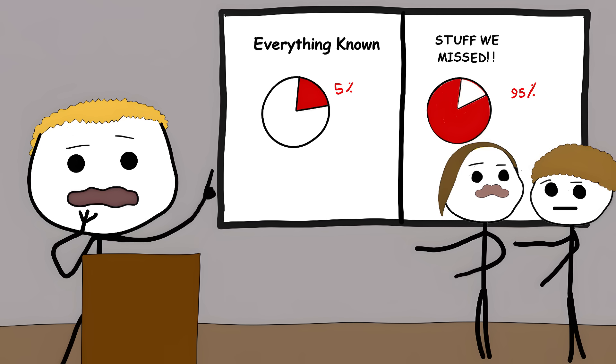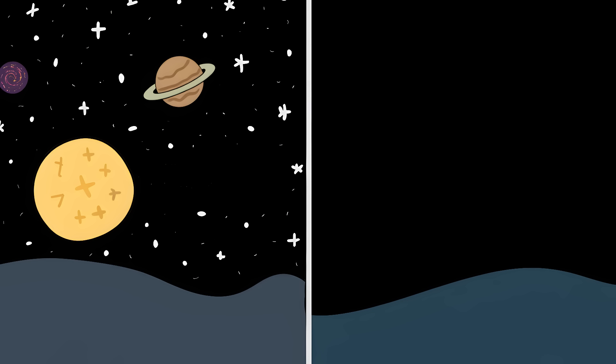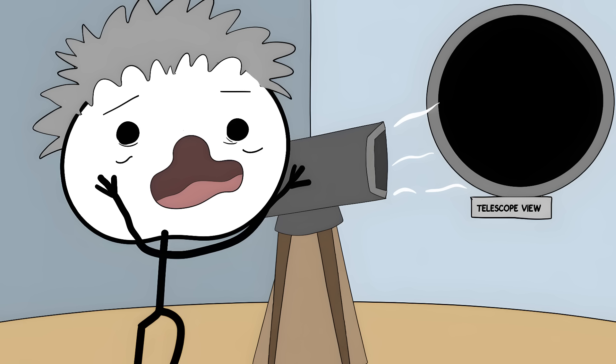Number 8. The 95% we can't see. Everything you know about the universe, all the stars, planets, and galaxies, is just 5% of what's actually out there. Scientists discovered that 95% of our universe is completely invisible to us.